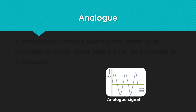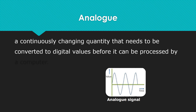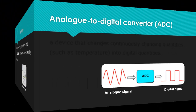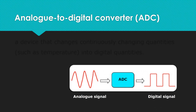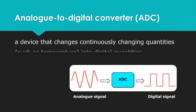Analog is a continuously changing quantity that needs to be converted to digital values before it can be processed by a computer. Analog to digital converter (ADC) is a device that changes continuously changing quantities such as temperature into digital quantities.